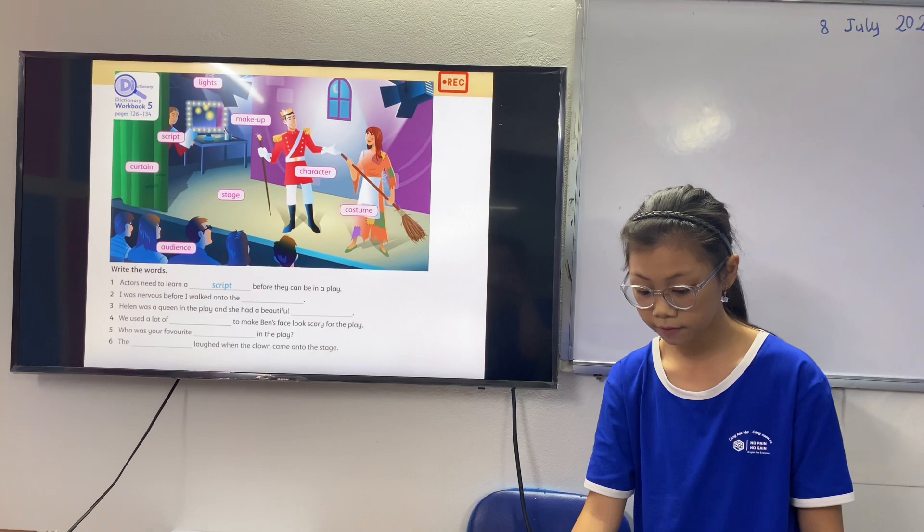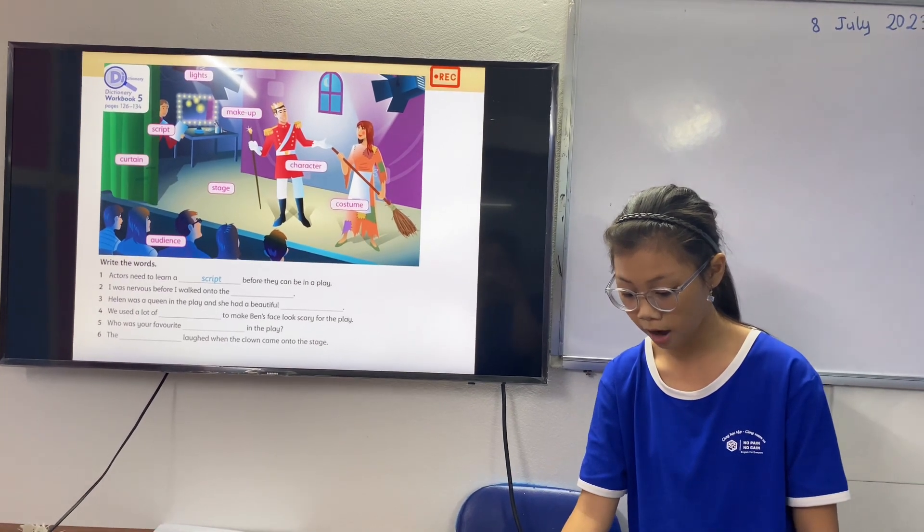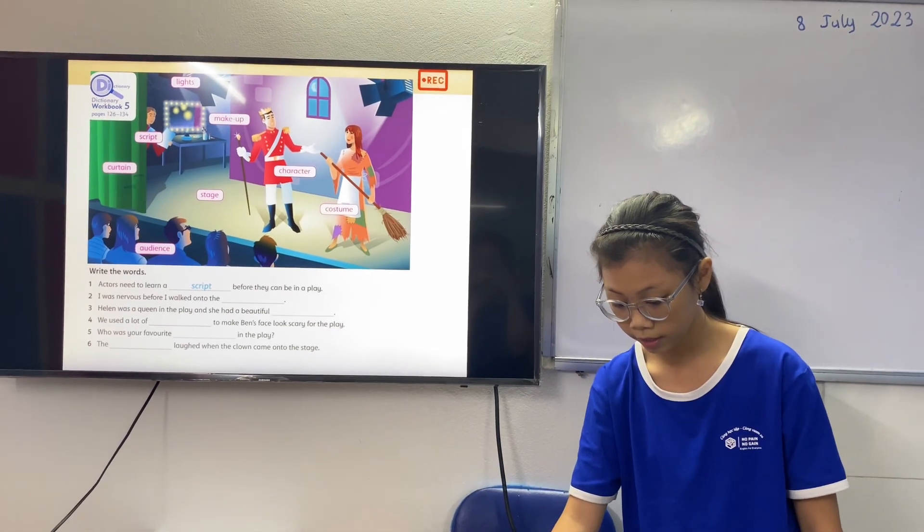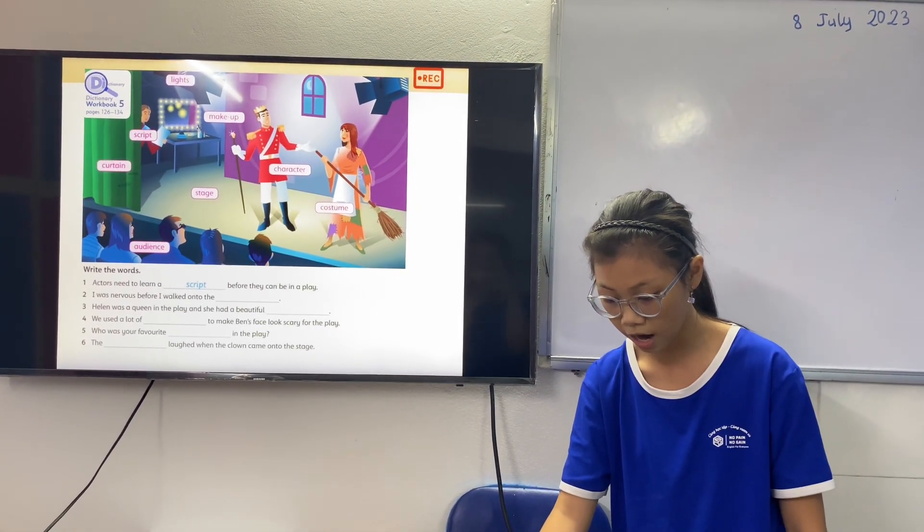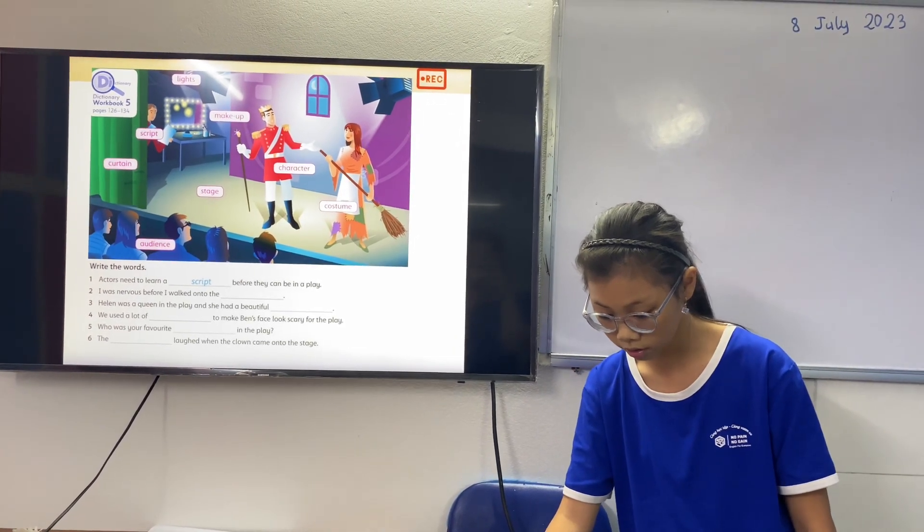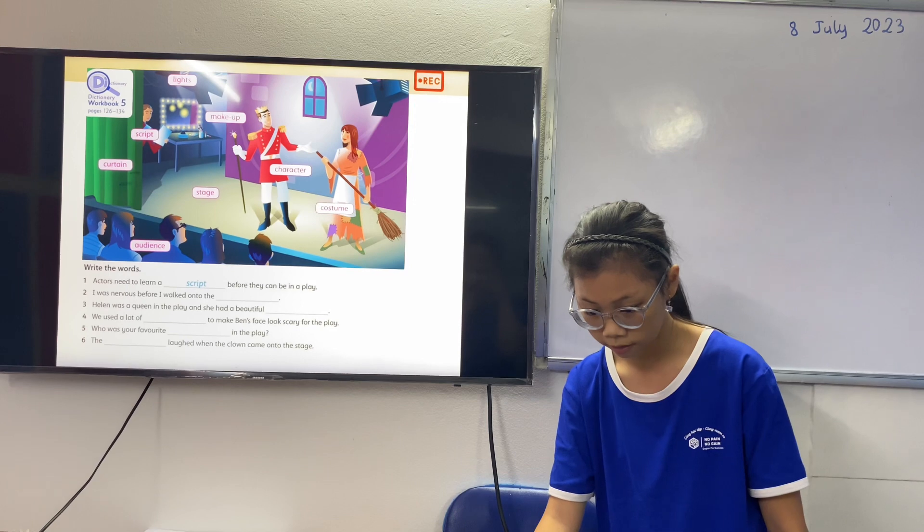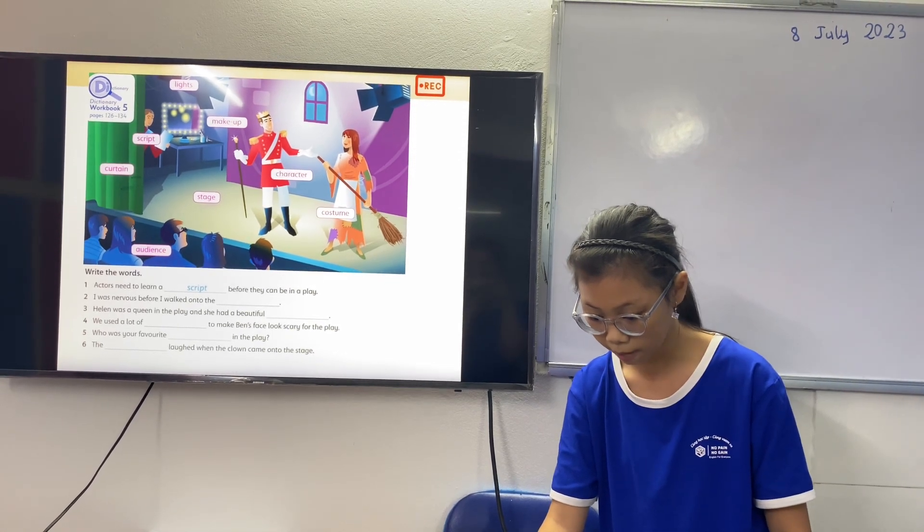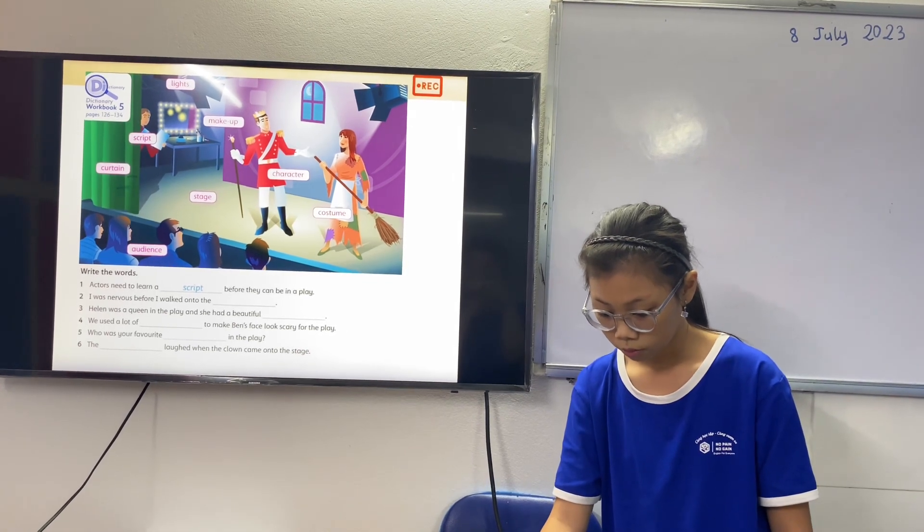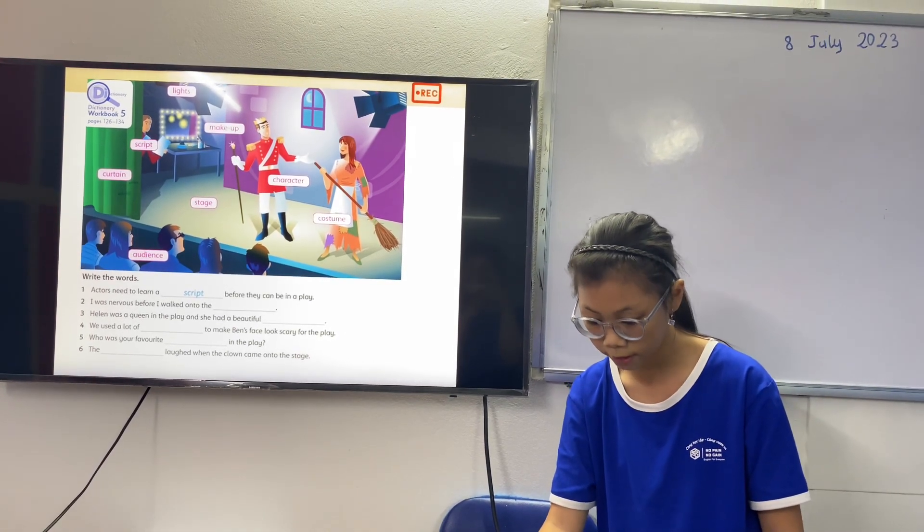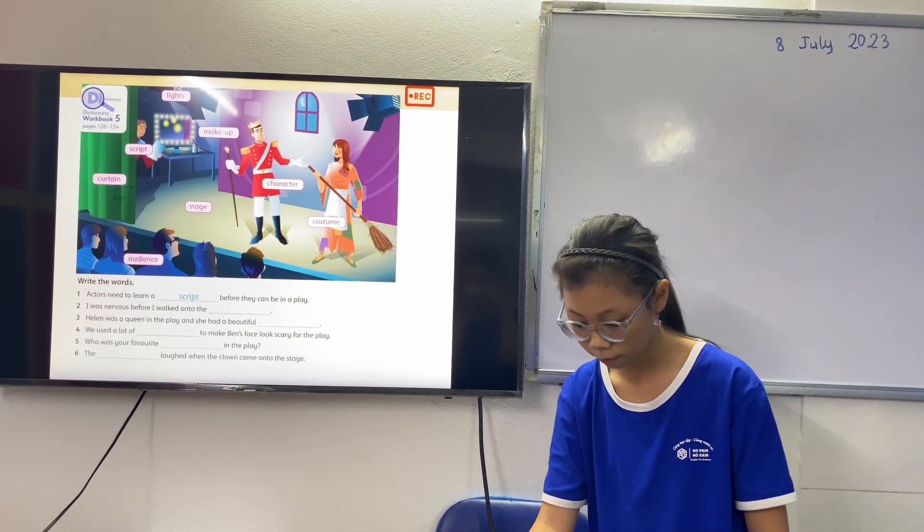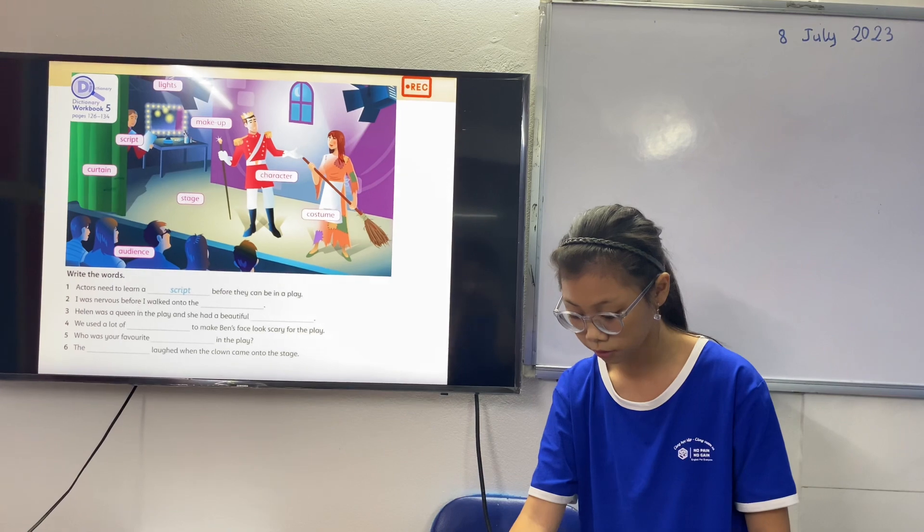I was nervous before I walked onto the stage. Helen was a queen in the play and she had a beautiful costume. We used a lot of makeup to make them say it looked scary for the play. Who was your favorite character in the play? The audience clapped when the clown came onto the stage.